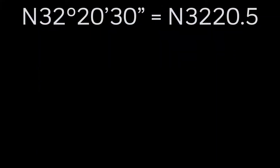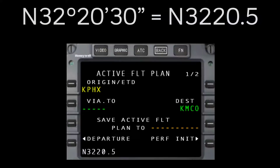It's worth pointing out that the FMS does not recognize seconds in the entry format, but minutes can be entered in tenths or hundredths by inserting them after a decimal. For example, north 32 degrees 20 minutes 30 seconds would be entered as N 32 20.5.